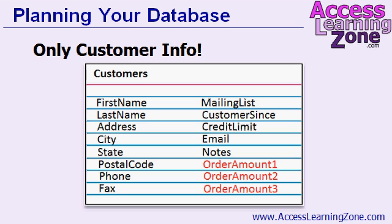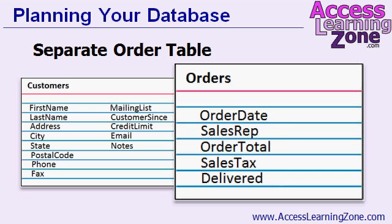You'll also notice in my customer table, I do not have any fields to store information on the customer's orders. I've seen some people build databases where in their customer table they'll have Order1, Order2, Order3 — that's bad database design. You want that information regarding their orders to be in a separate orders table. In the order table, you track the details for those orders: the order date, the sales rep, the order total, the sales tax collected, whether or not it was delivered, and so on. This gets stored in a separate table because now there's no limit to the number of orders each customer can have.